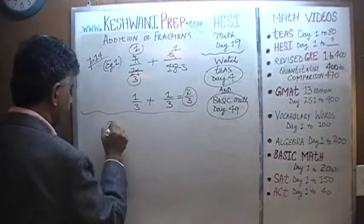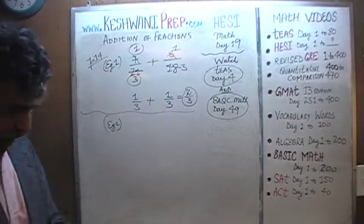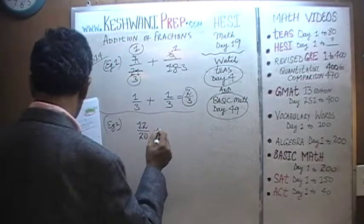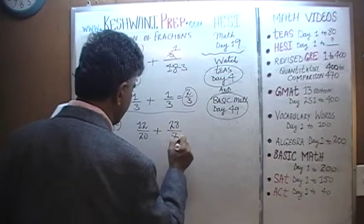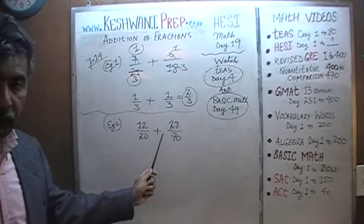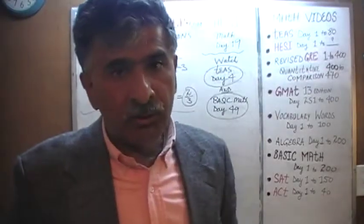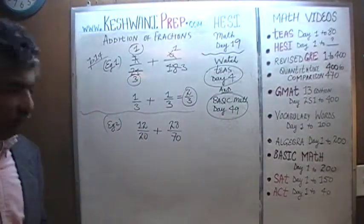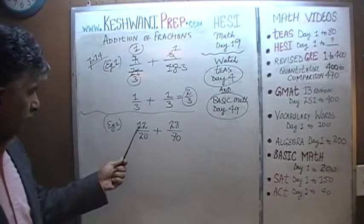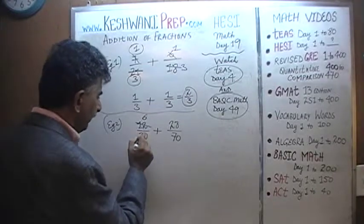Let's do one more. Example number 2, also on page 14. They are asking us: 12 over 20 plus 28 over 70. In the book itself, they are simply asking you to reduce the fraction 12 over 20 — the addition part is our invention. Before we do any work at all, because finding a common denominator of 20 and 70 will create a lot of work, let's see if we can reduce. We see 12 on top and 20 on the bottom, so let's divide top and bottom by 2: 12 becomes 6 and 20 becomes 10.